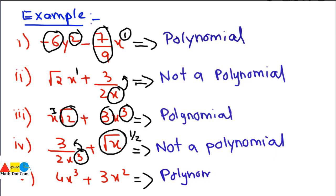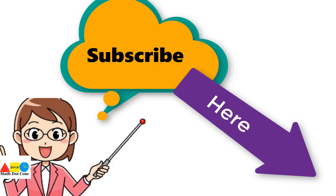That was all about how you can identify whether a given algebraic expression is a polynomial or not, depending on three basic conditions: one, the exponent should be non-negative; two, the exponent should be an integer with no fractional part; and three, the coefficients should be real numbers. Thank you for watching — please subscribe to our channel math.com for more updates.